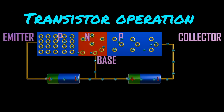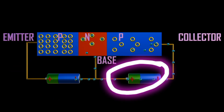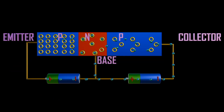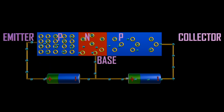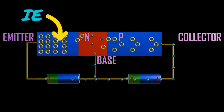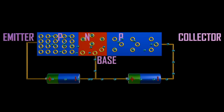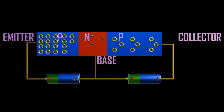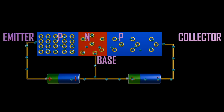PNP transistor operation: forward bias voltage is applied to the emitter-base junction and reverse bias is applied to the collector-base junction. The forward bias causes holes to move towards the base, constituting the emitter current. As holes move towards the N-type base, they try to recombine with electrons. Since the base is lightly doped, only a few electrons recombine with holes within the base. These recombined holes constitute a small base current.